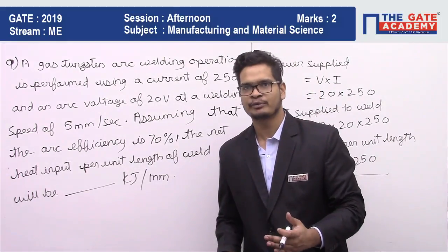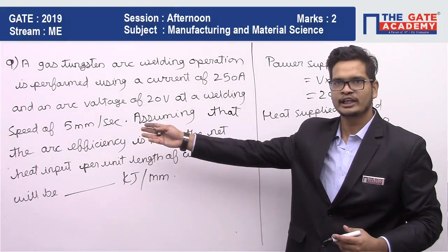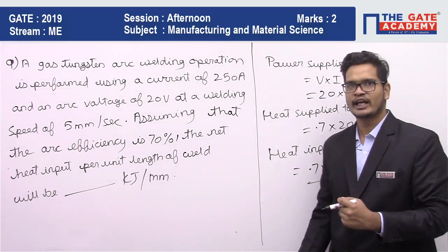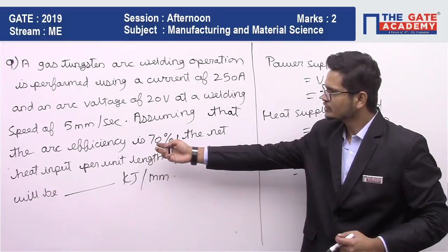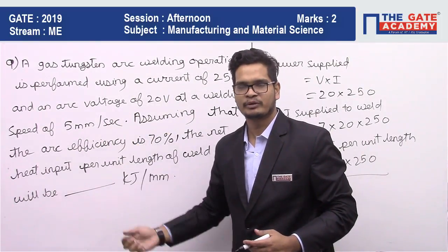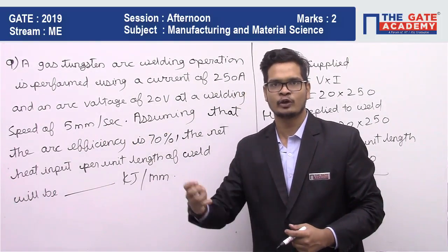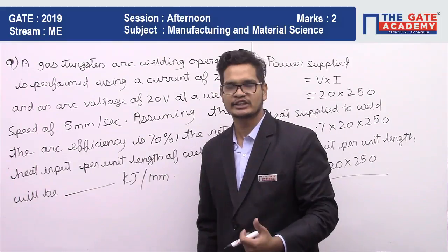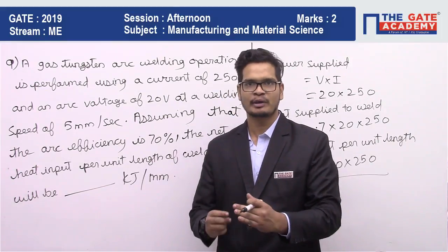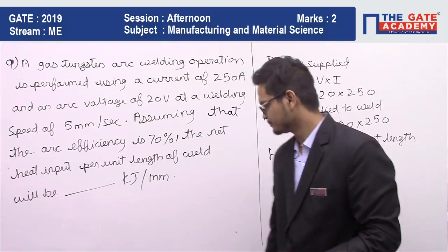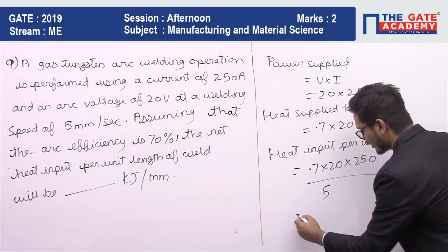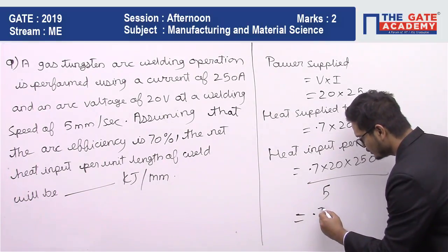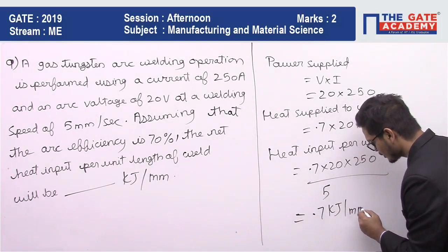Even if you didn't understand the concept in the exam, you could have solved this question directly by balancing the units. The unit of power is watts, which is kilojoules per second. The unit of speed is mm per second. When you divide kilojoules per second by mm per second, the final unit you get is kilojoules per mm. So just by balancing the units, you could have solved this question.